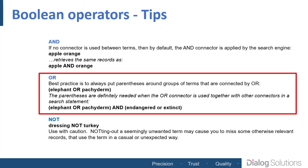With OR, it's always a good idea to put parentheses around the group of terms that you're ORing together, as you can see here. It's not strictly necessary if your whole search statement is something like dog or cat, but it's a good search habit to always use parentheses with OR, because it is critical if you're doing a search that combines the OR operator with other connectors, such as AND or NOT, as we'll see in the next slide.